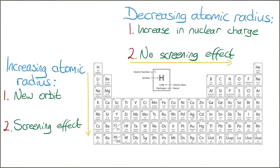As you go down the group, the atomic radius is getting bigger. Opposites attract and there is an attraction between electrons and protons. The greater the number of protons, also known as the nuclear charge, the greater the strength of the attractive force. The protons are essentially pulling the electrons closer to the nucleus, making the atomic radius smaller. This means that as you go across a period, left to right, the atomic radius is getting smaller due to the increasing nuclear charge.